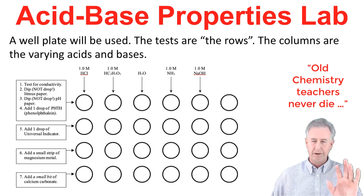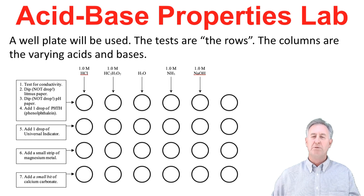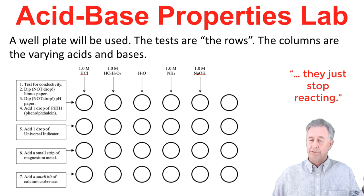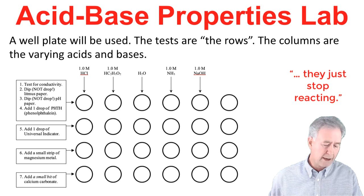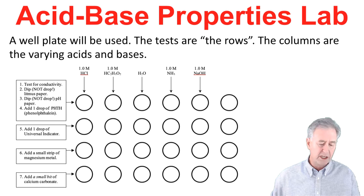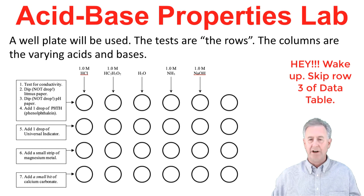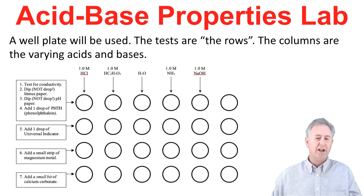I failed to run the tests for pH paper when I did the video — I just forgot to do it entirely. So in your lab report, you're going to simply have to skip row 3 of the data table. That data table is where you're going to record your observations, and I'll guide you through as we go.